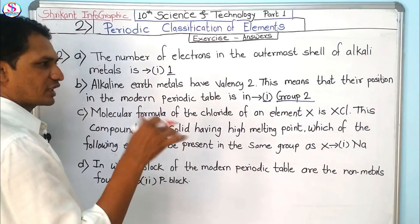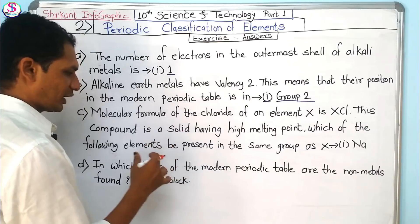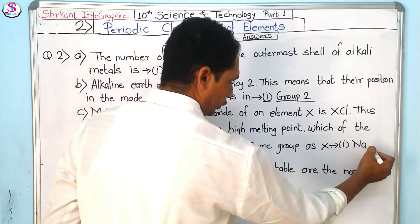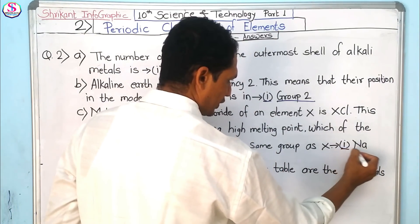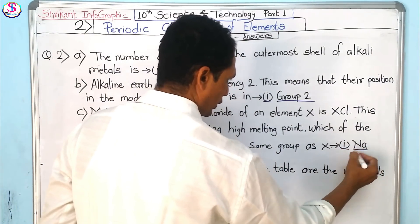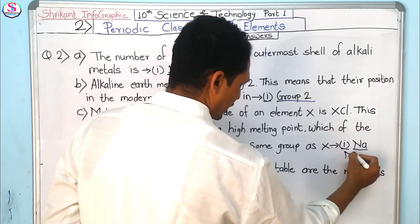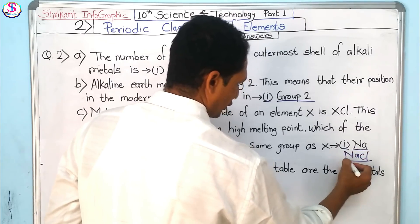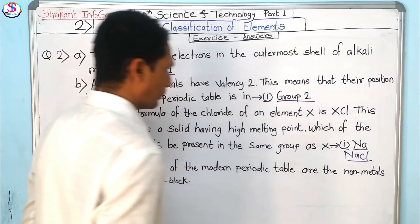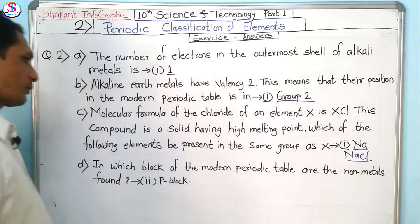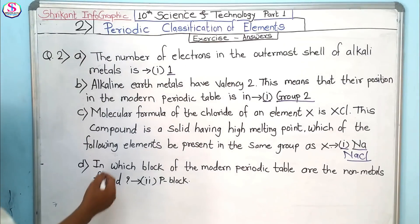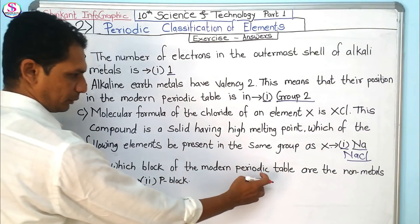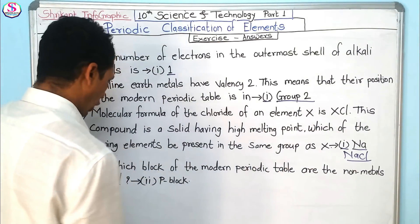Which of the following elements would be present in the same group as X? The correct option is option 1, that is sodium. An example is NaCl. Then, in which block of the modern periodic table are the non-metals found?